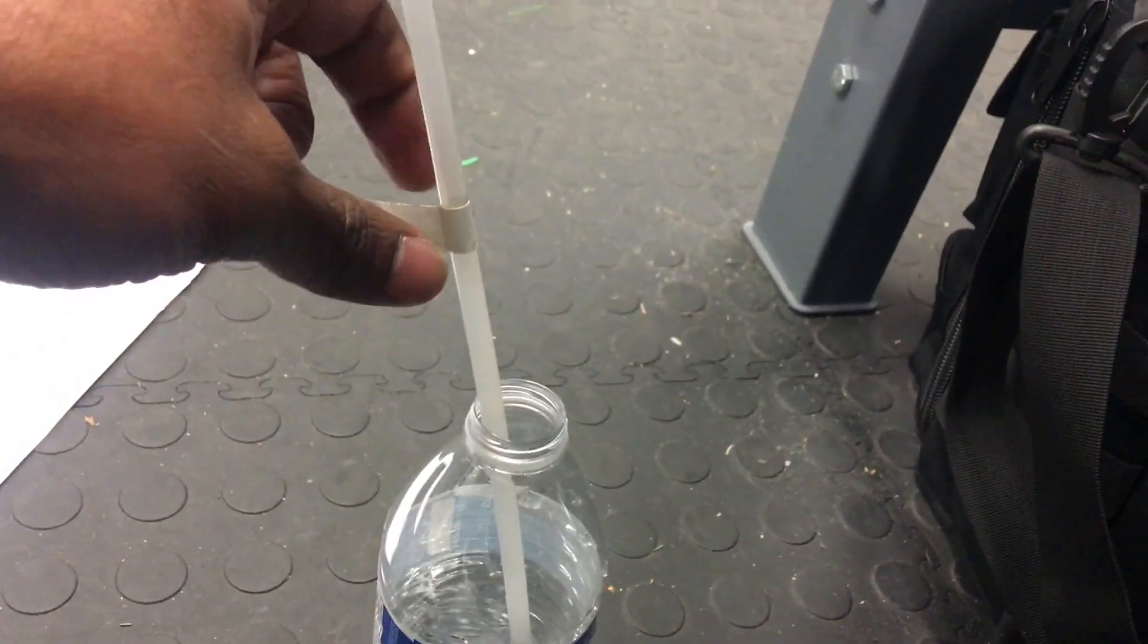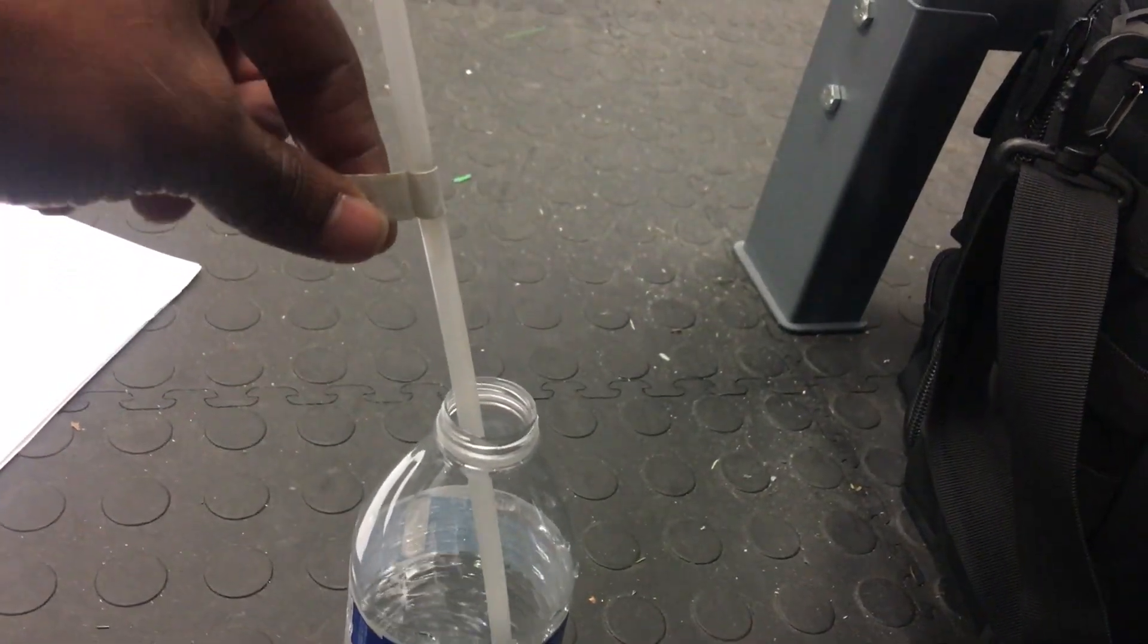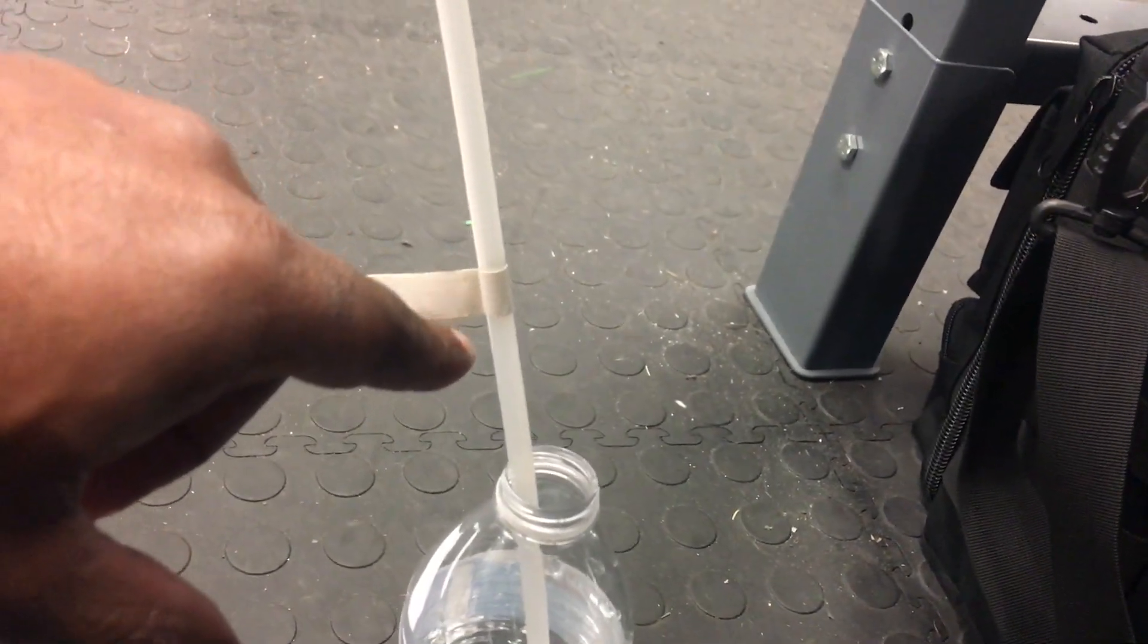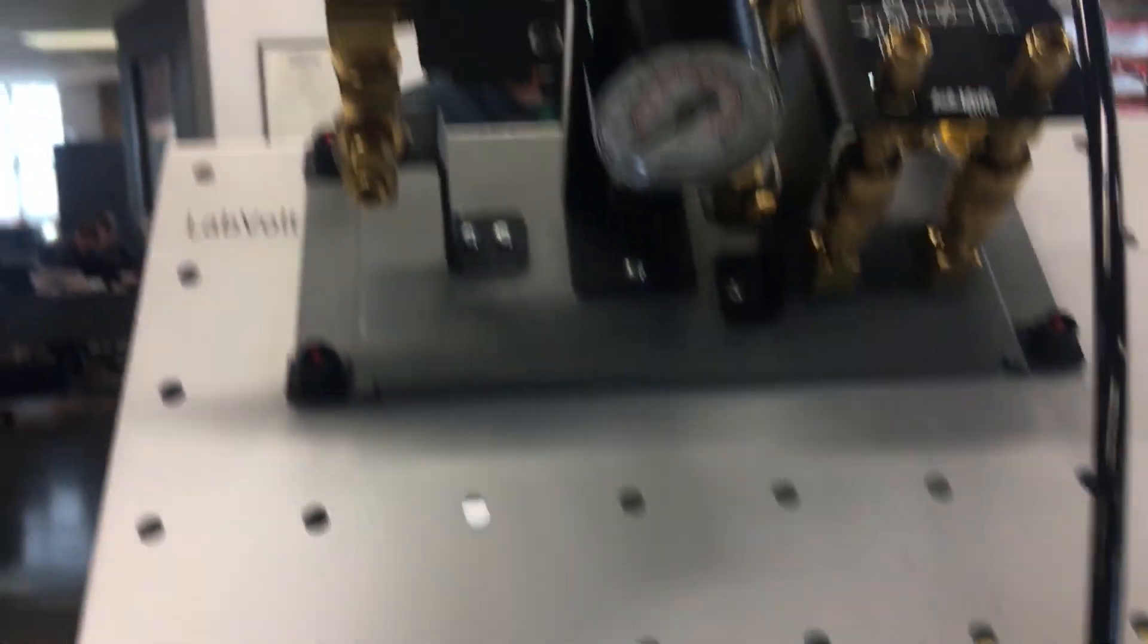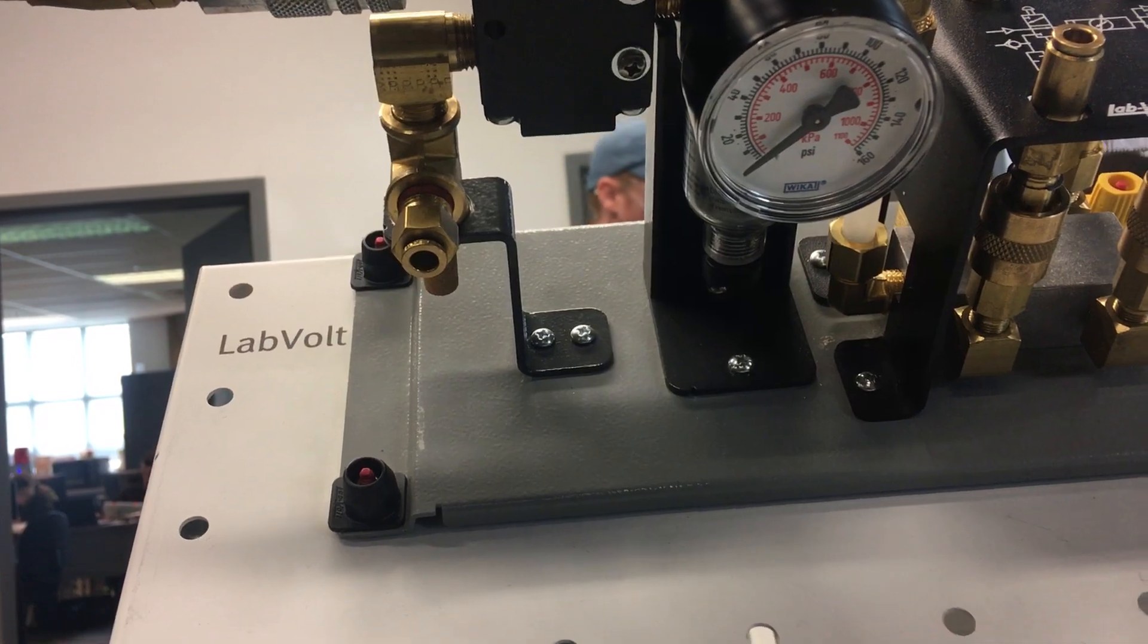I'm trying to find this water level. Where is it now? Right now the water level is about 10. I'm going to bring this up to approximately 1 PSI. Give it about 30.